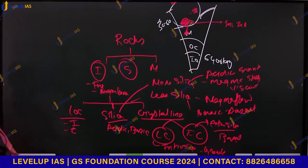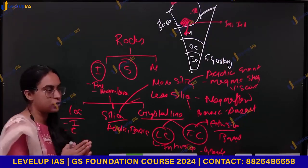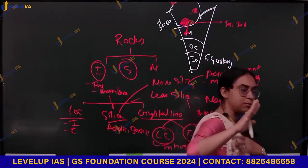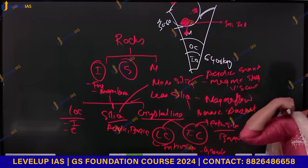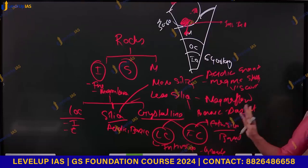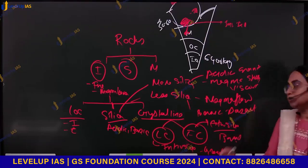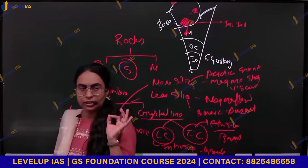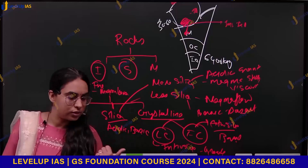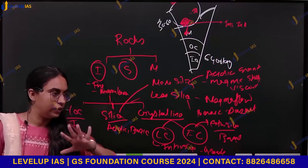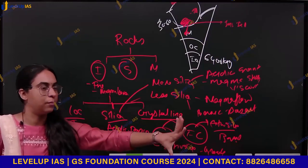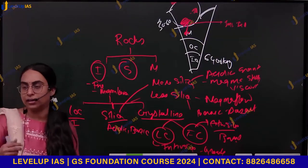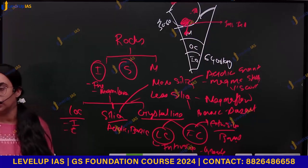So we have covered: what are rocks, what is igneous rock, how is it formed, and what are the types of igneous rocks — classified by location, silica content, and crystal structure.